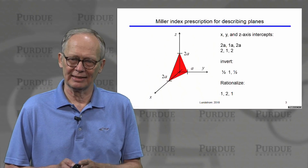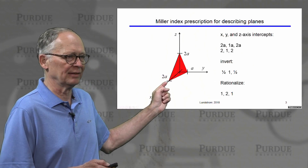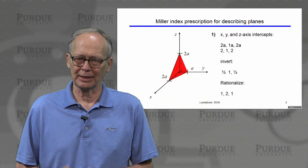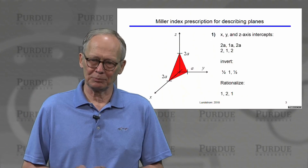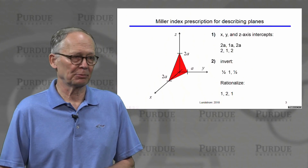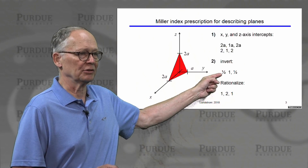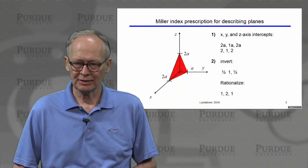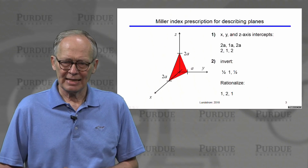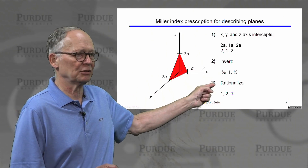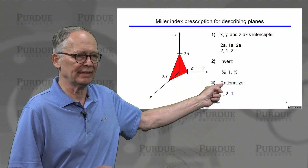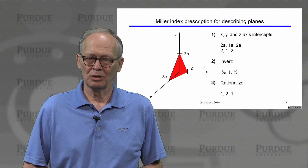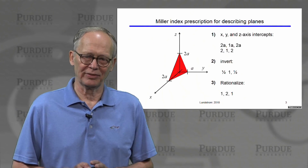There's no need to carry the A around because we understand that everything is measured in units of A. So we express these intercepts as 2, 1, 2 — that's the first step of our prescription. The next step is to invert those: two becomes one-half, one becomes one, two becomes one-half. So now we have a set of inverted indices. The final step is to rationalize them — multiply everything by two — giving us the numbers 1, 2, 1.